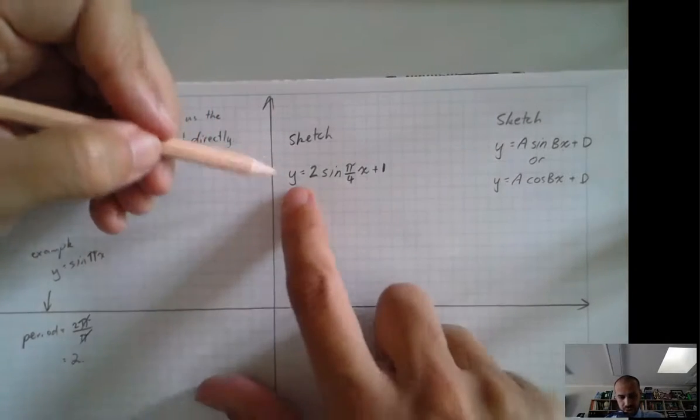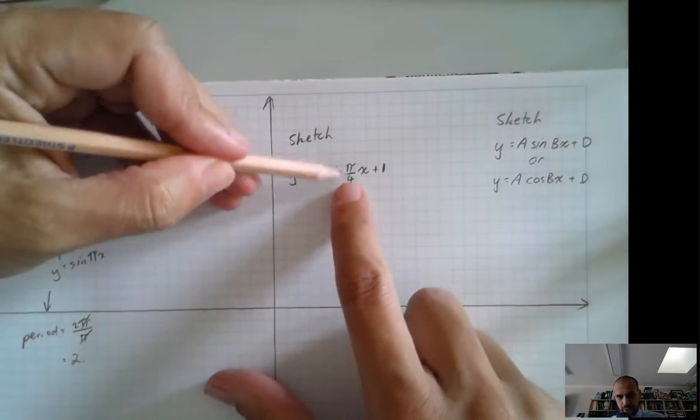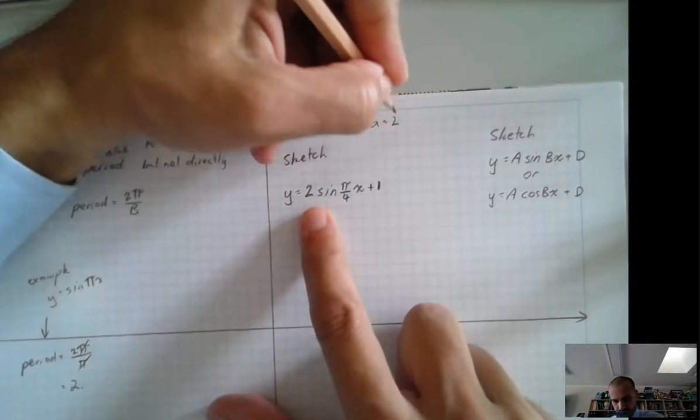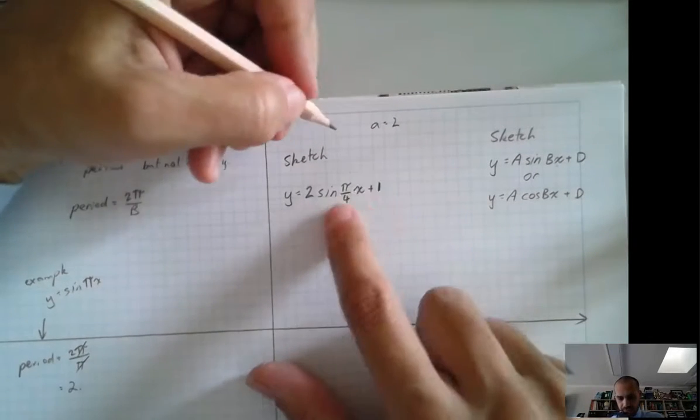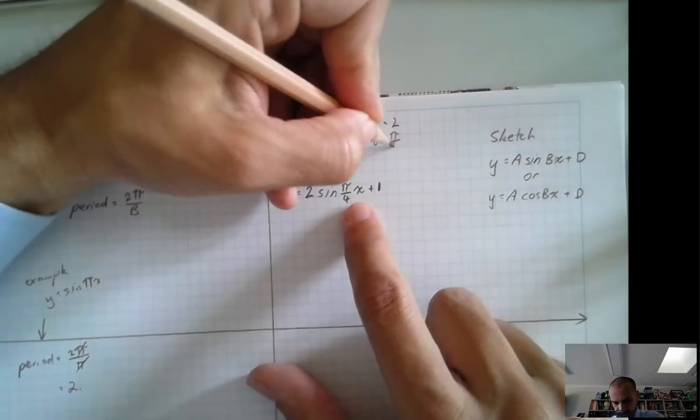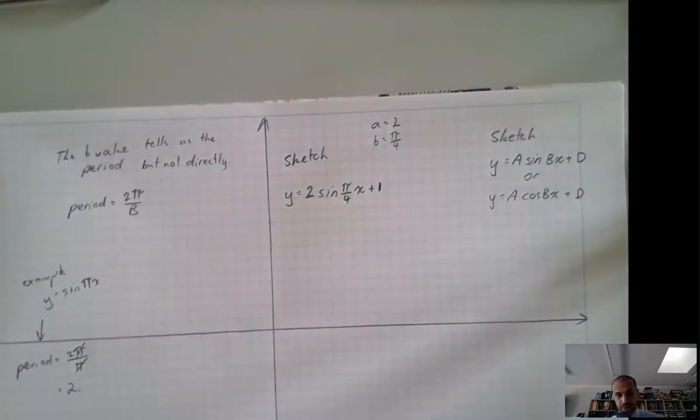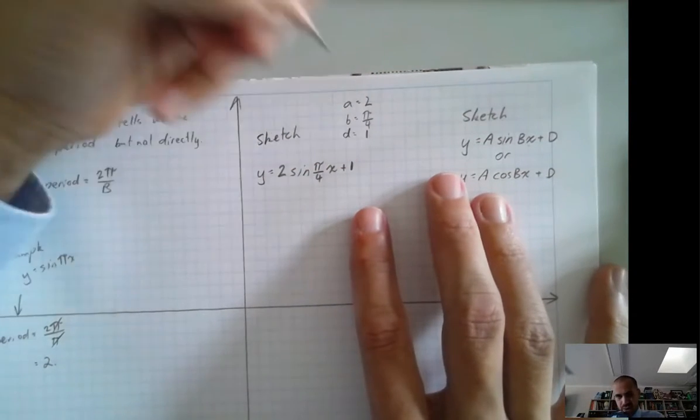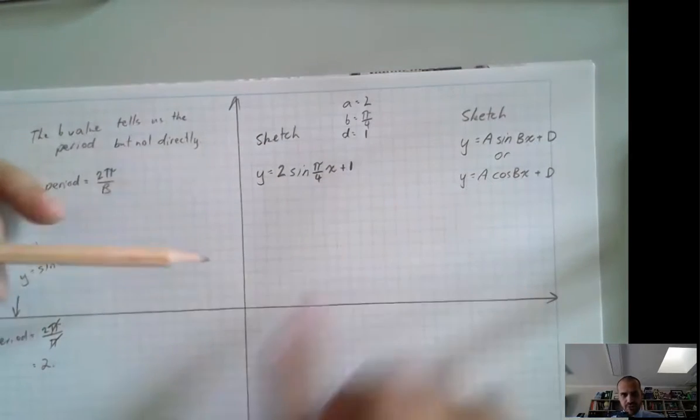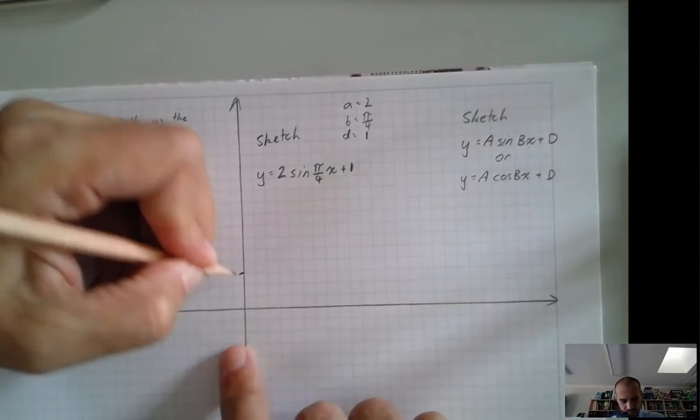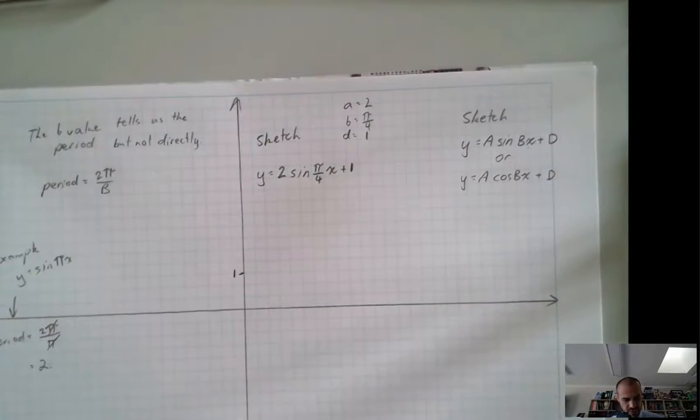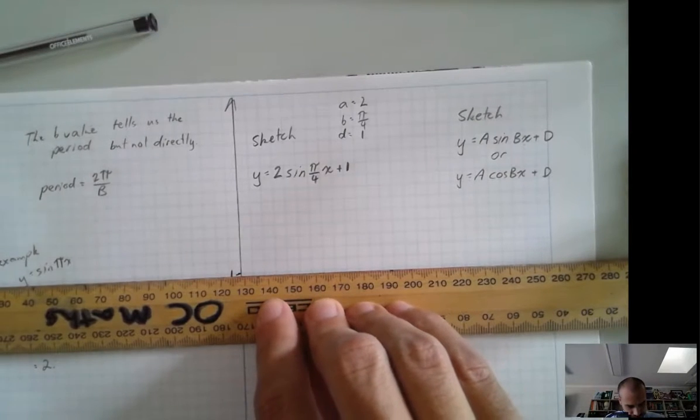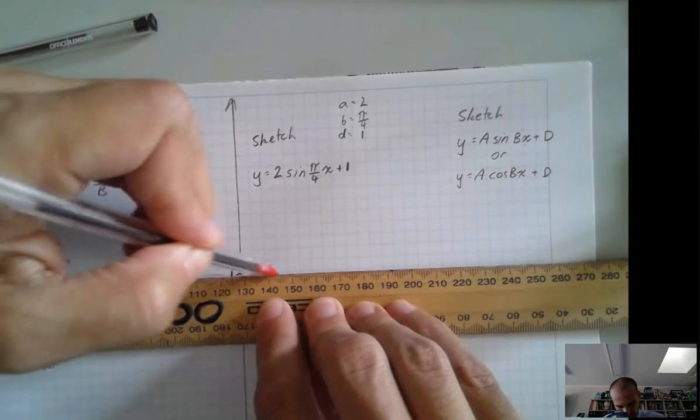So this is what I'm going to sketch. I'm going to sketch y equals 2 sine pi on 4 x plus 1. So 2, so our a value equals 2. That's our amplitude. Our b value equals pi on 4. Now, that's not our period. We don't know what our period is yet. We just know that the b value is pi on 4. And the d value we know is 1. And the d value is what shifts this thing up and down. So I'm just going to draw that in for now. My d value is there, so that's going to be the centre of my periodic function. I'm going to put a little dotted line on that so I don't mess things up.